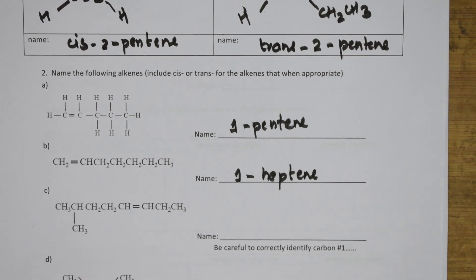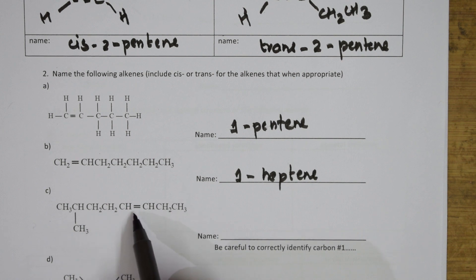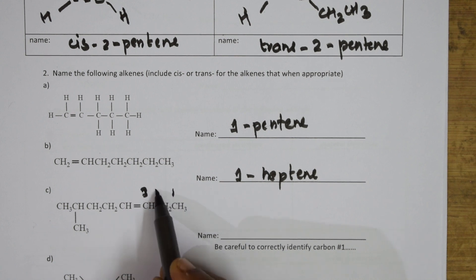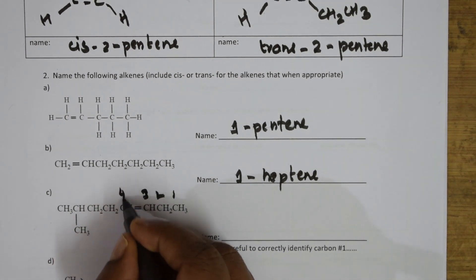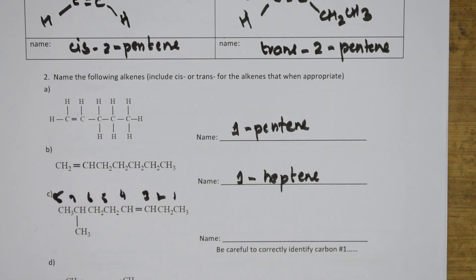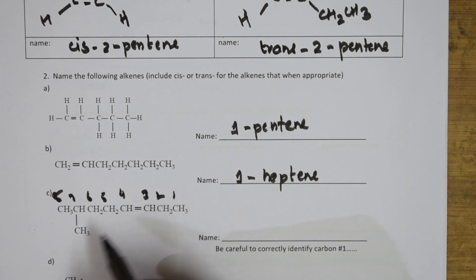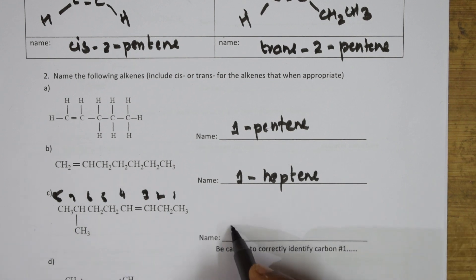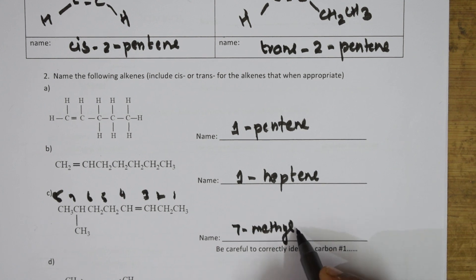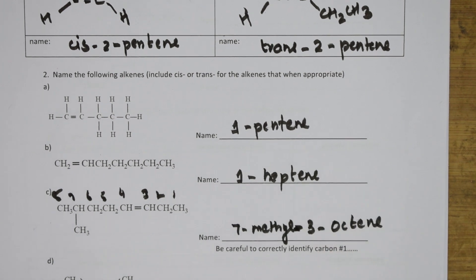Here there are two things to see: there is a double bond and there is a substituent. The double bond should get the minimum number, so I start from here: one, two, three, four, five, six, seven, eight — eight means oct. The double bond is at the third carbon, so it is 3-octene. The substituent is at the seventh position, so you need to write 7-methyl-3-octene.